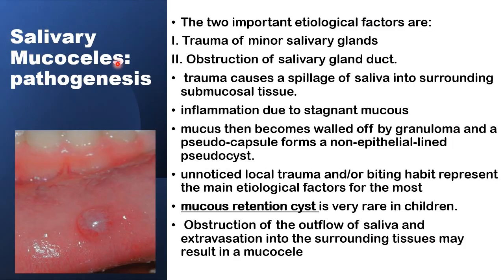How do they form? There are two important etiological factors. Number one is trauma to the minor salivary glands in the oral cavity, particularly the lower lip and the tongue. Number two is obstruction of the drainage of these minor salivary glands. The trauma factor can cause spillage of saliva from the minor salivary gland and its duct into the surrounding submucosal tissue, causing inflammation due to the stagnant mucus. The mucus is then walled off by granulation tissue, forming a pseudocapsule not lined by epithelium — a non-epithelial-lined pseudocyst.